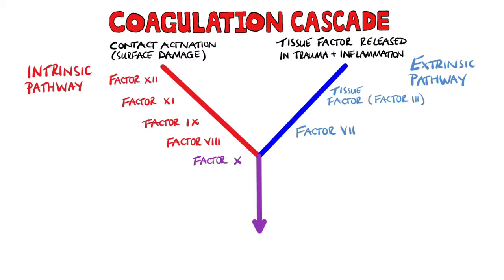As you can see, the factor 7 and tissue factor complex, as well as factor 8, both activate factor 10. This is therefore where both pathways meet and become the common pathway, shown in purple.